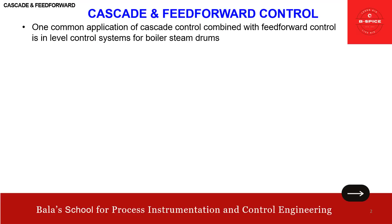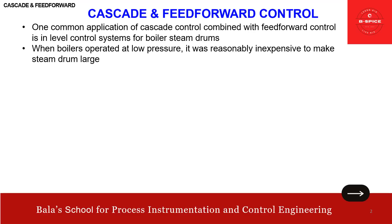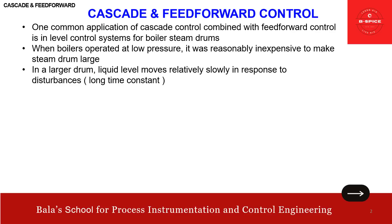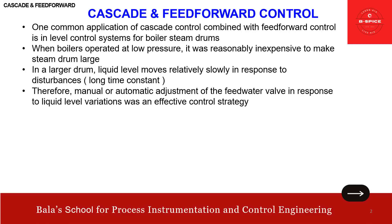One common application of Cascade control combined with FeedForward control is the level control system for a boiler steam drum. When boilers operated at low pressure, it was reasonably inexpensive to make the steam drum larger. In a larger drum, the liquid level moves relatively slowly in response to disturbances — basically, a long time constant. Therefore, manual or automatic adjustment of the feed water in response to liquid level variation was an effective control strategy.